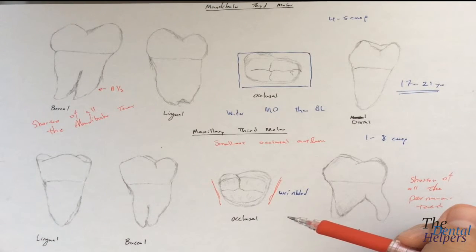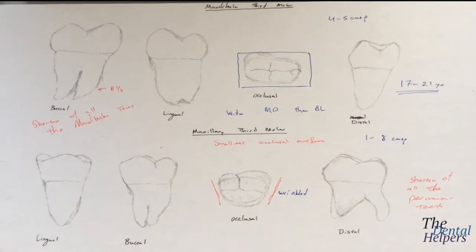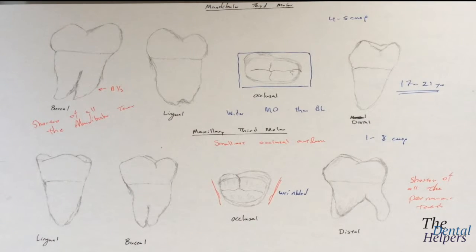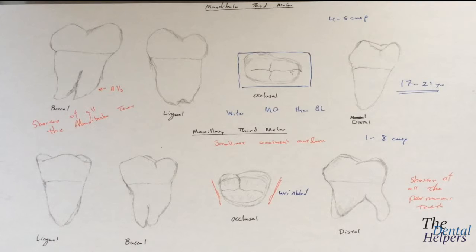A lot of dentists say that you should extract the maxillary and mandibular third molars, but there's actually no evidence stating that you have to. What happens is because of a person's jaw size, they might not be able to reach the third molars, and as a result they're not able to brush those teeth, leading to decay. So it's suggested to remove those teeth just because it's harder to reach them. However, if somebody has a larger jaw, those teeth may become very important — especially when the second or first molars are extracted — as you can use those third molars for support for a bridge or for other prosthetics.